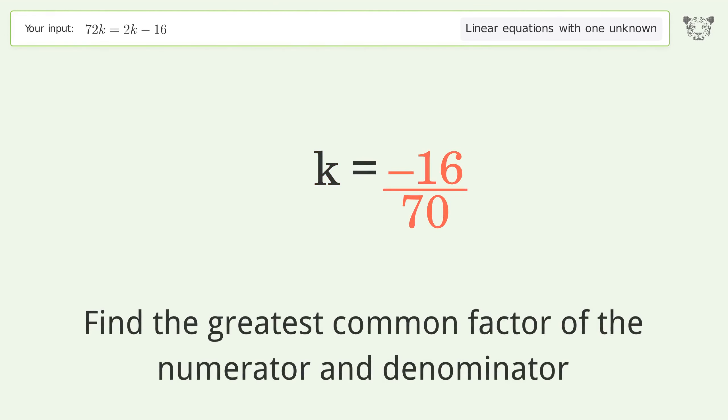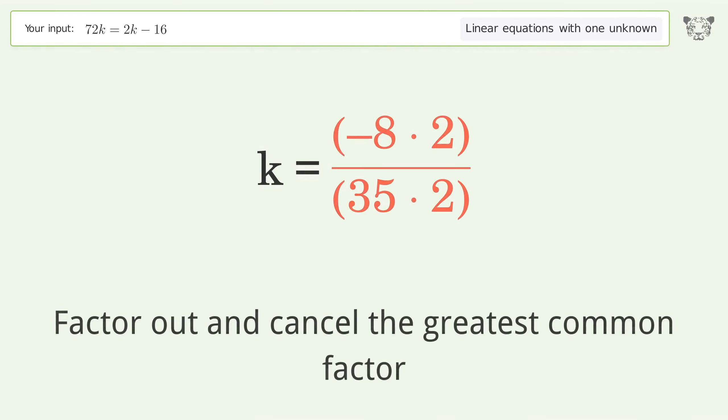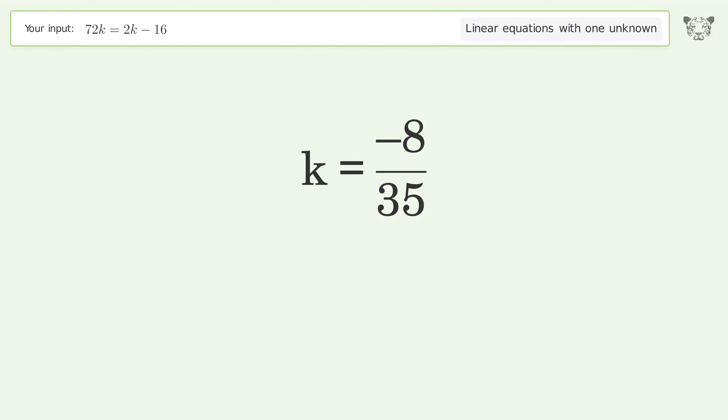Find the greatest common factor of the numerator and denominator. Factor out and cancel the greatest common factor. And so the final result is k equals negative 8 over 35.